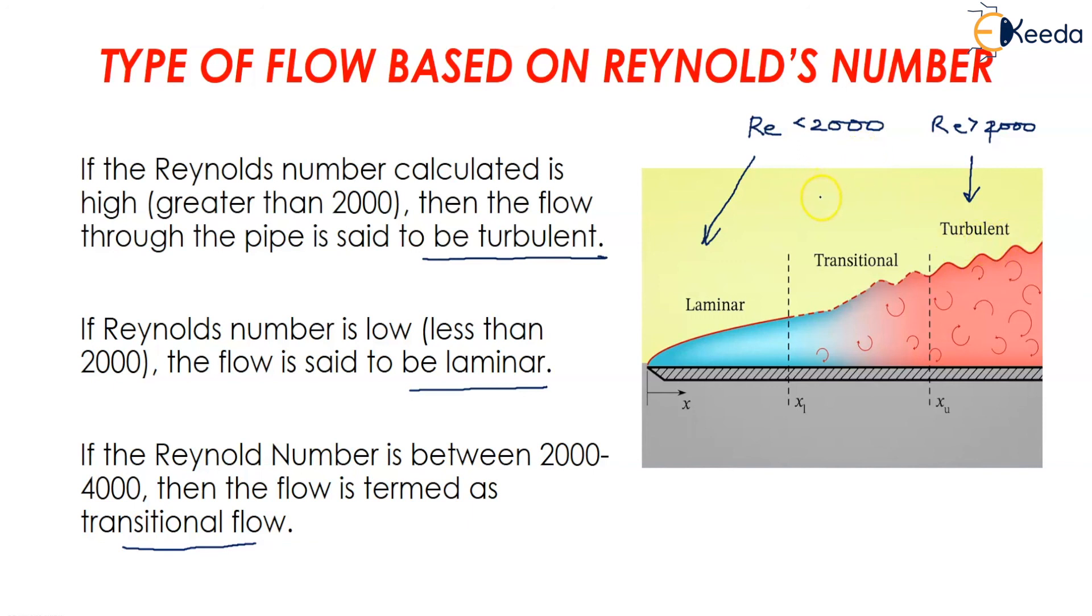If it is in between 2000 to 4000 the flow is said to be a transition flow.